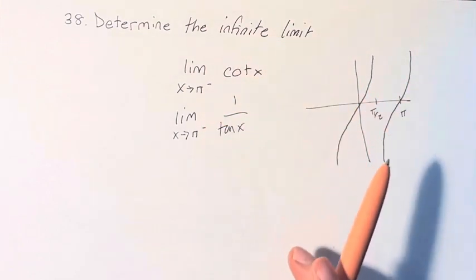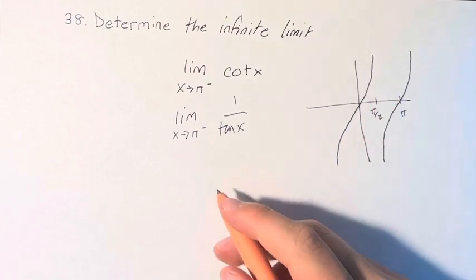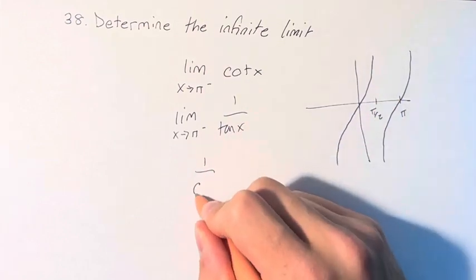So if we're coming at pi from the left, then we're approaching 0 from the left. This is 1 over 0 from the left.